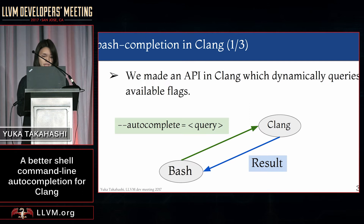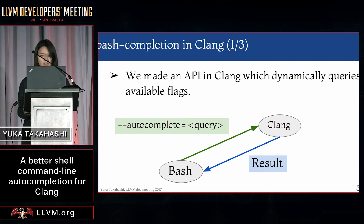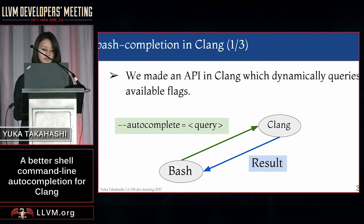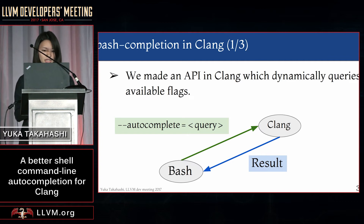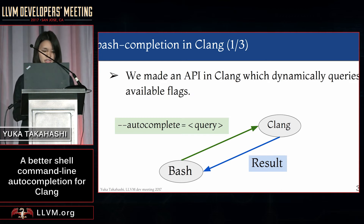So, in this project, we made an API in the Clang driver which dynamically queries available flags, their descriptions, and values. The command line flag named autocomplete was added to Clang and bash handles this flag. When the user presses tab in bash, bash will execute Clang minus autocomplete equal query. The Clang driver will then search for the appropriate flags or values and return them with descriptions, and bash will print them.